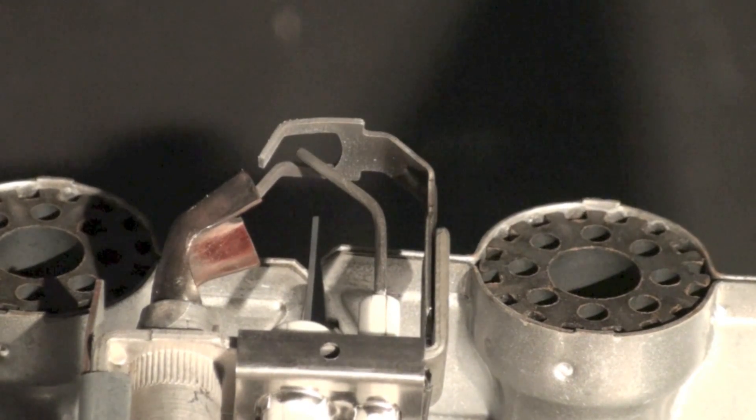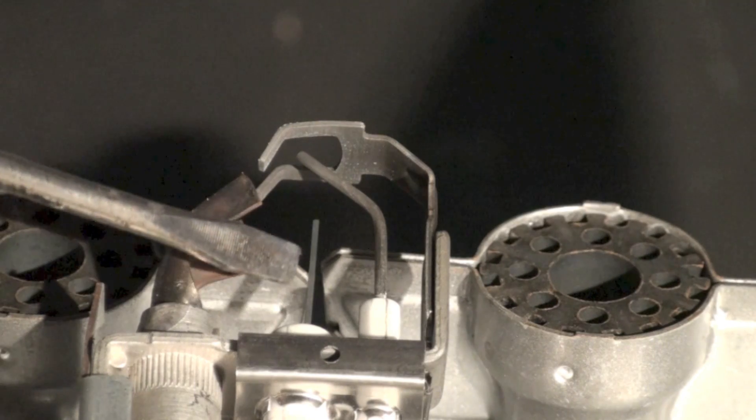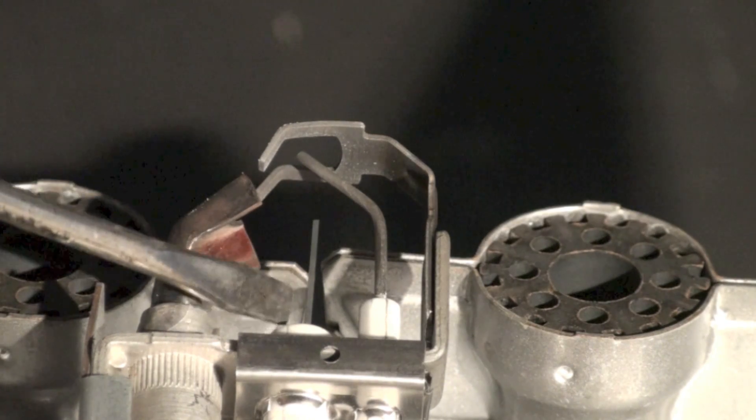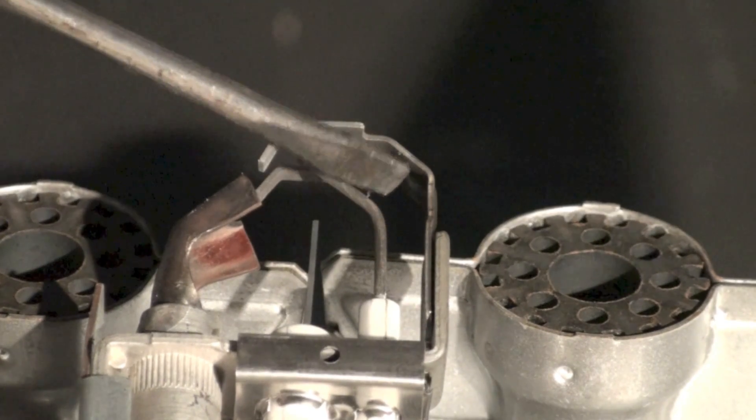Okay, pointing these things out. This is the hot surface igniter right there, that little kind of stick-looking thing. Gotta be careful with that thing; you'll break that pretty easy. This is a flame rod.